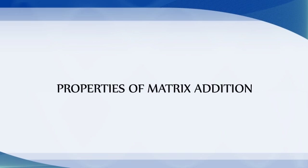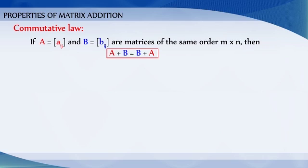Properties of matrix addition. Commutative law: If A is equal to Aij and B is equal to Bij are matrices of the same order M by N, then A plus B is equal to B plus A. That is, A plus B is equal to matrix Aij plus matrix Bij.